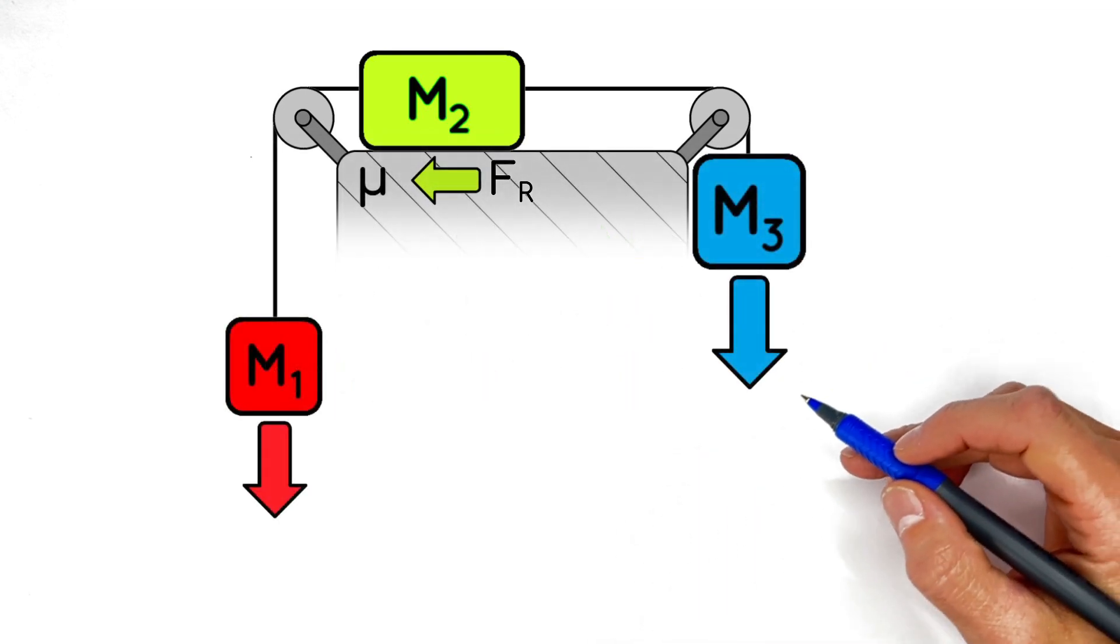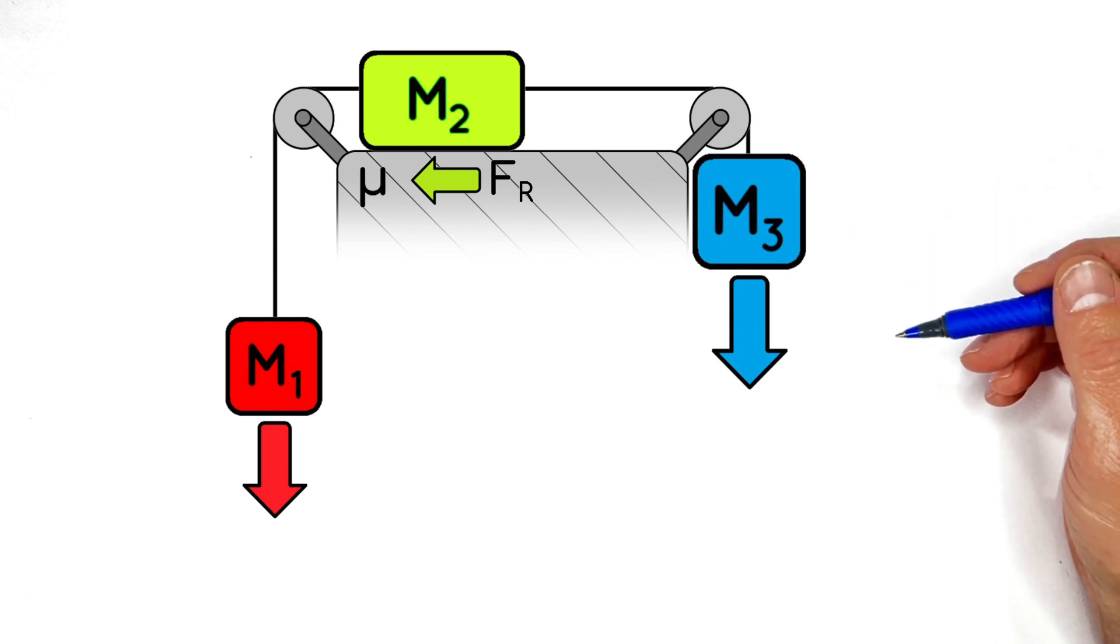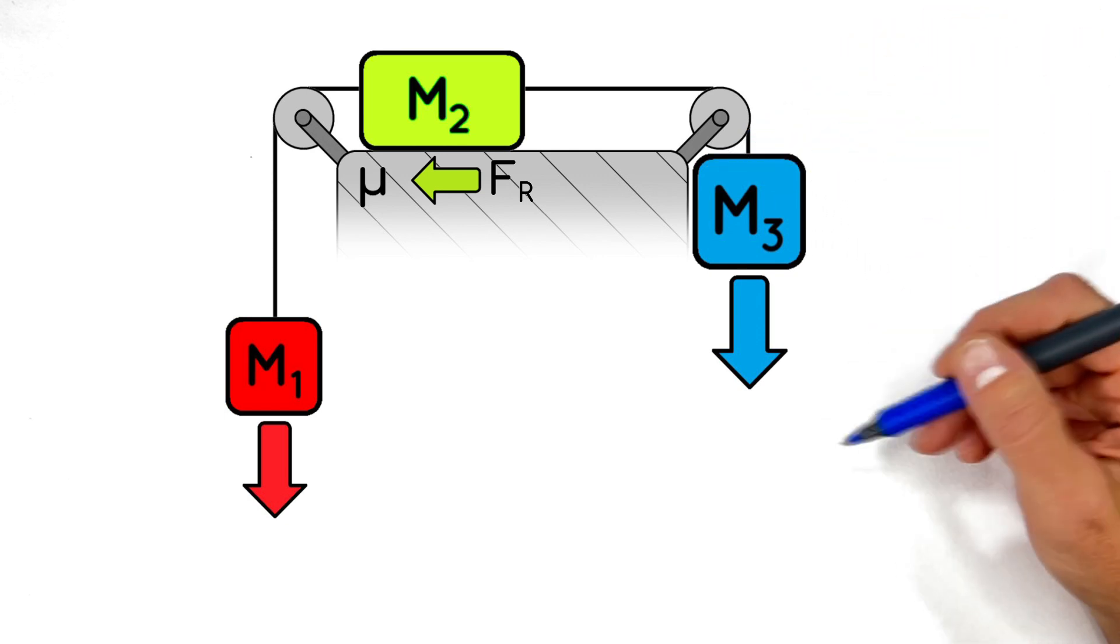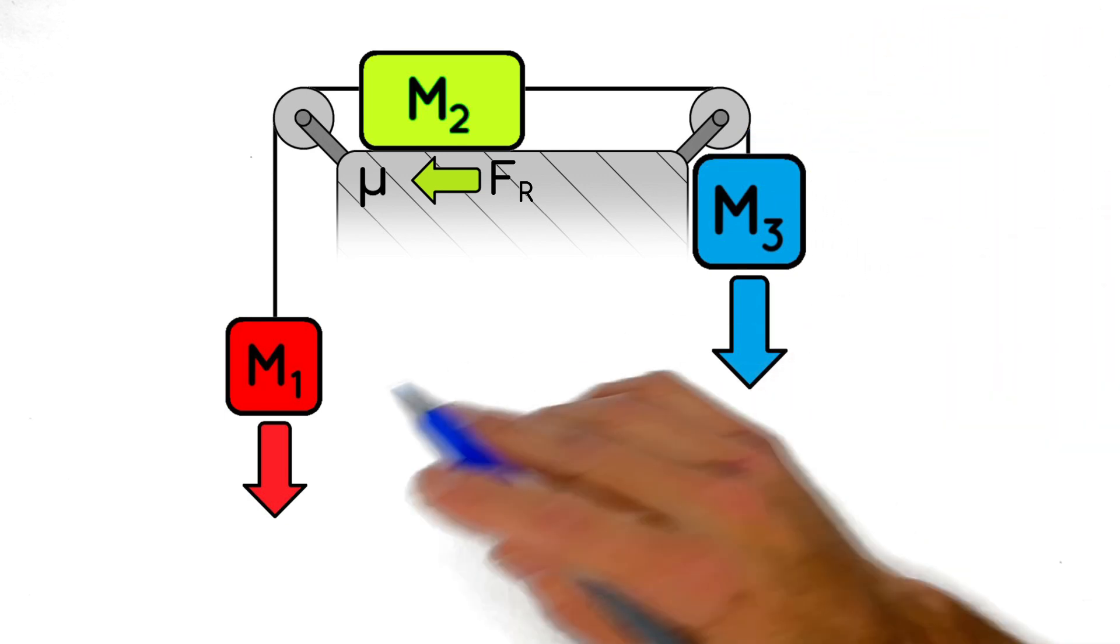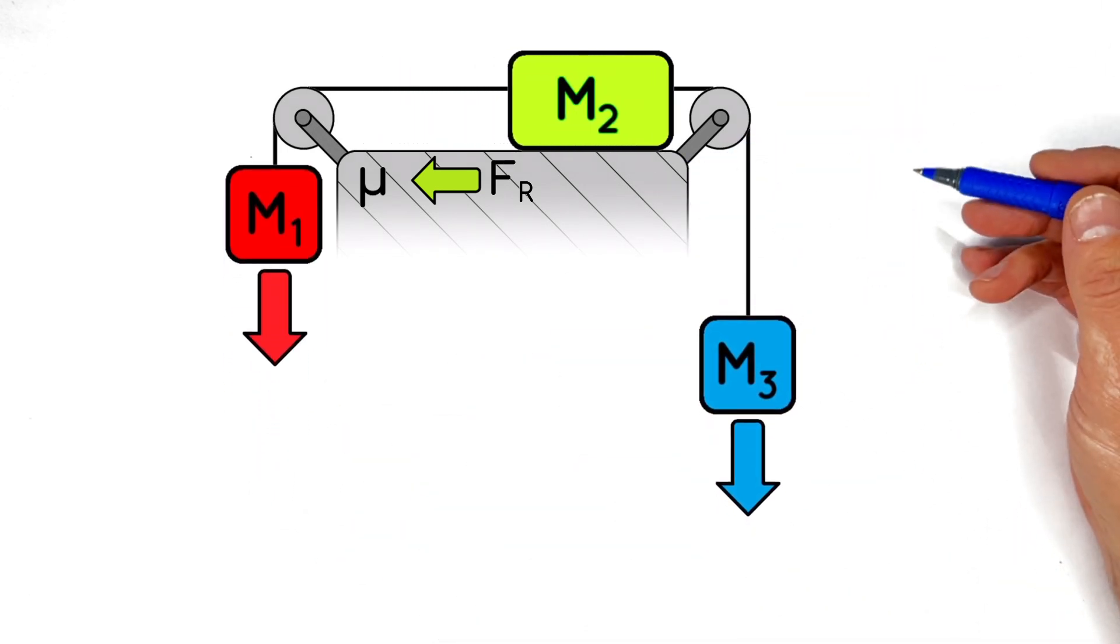So now we can determine whether or not the system is going to accelerate, which means we need to look at what's going to happen if we make this block, say this one on the right side, much heavier than the one on the left. Heavy enough that even friction can't keep this system in equilibrium.